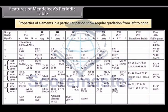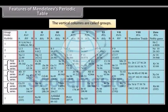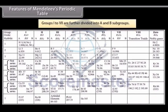Properties of elements in a particular period show regular gradation from left to right. The vertical columns are called Groups. These Groups are 9 in number and are numbered from 1 to 8 and 0. Groups 1 to 7 are further divided into A and B subgroups. Groups 0 and 8 do not have any subgroups.